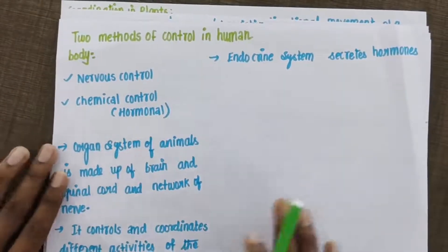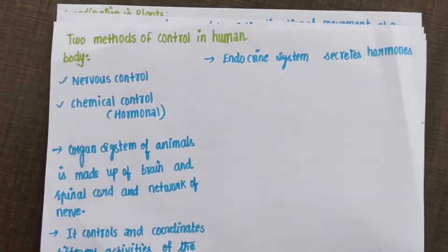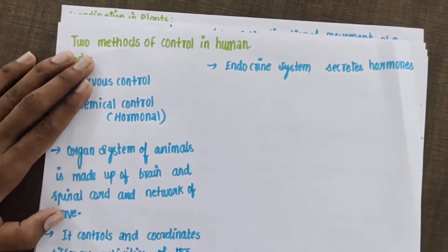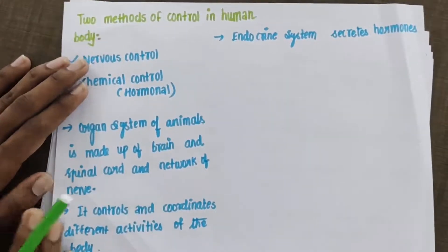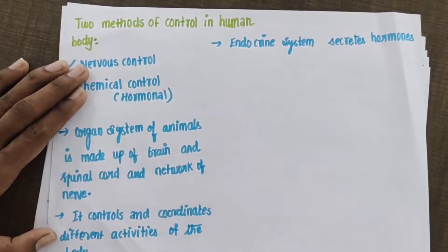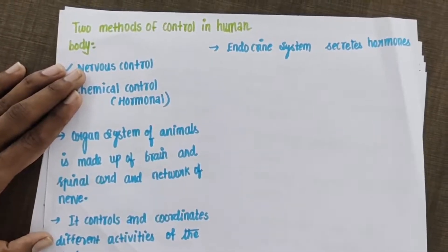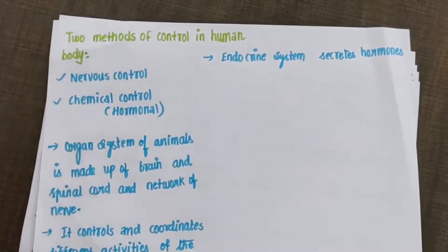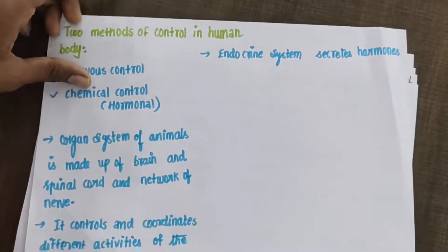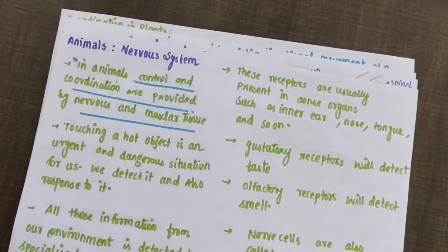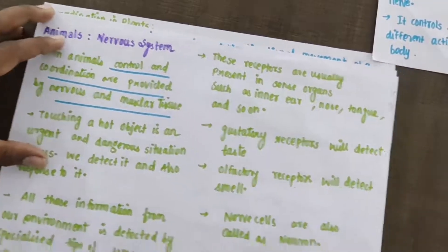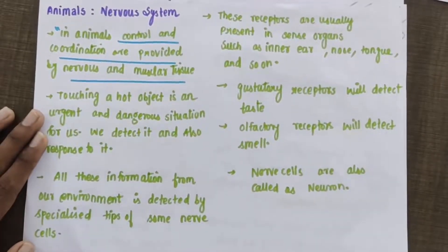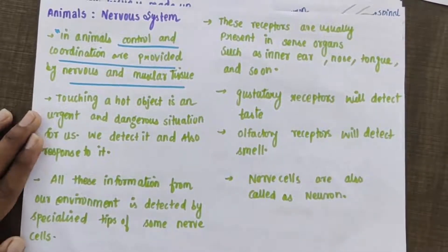You have something called hormones in our body — they are special chemicals that do something in our body. The nervous system in our body consists of the brain, spinal cord, and nerves. The brain has the control and coordination system. You have nervous tissue and muscular tissue working together.